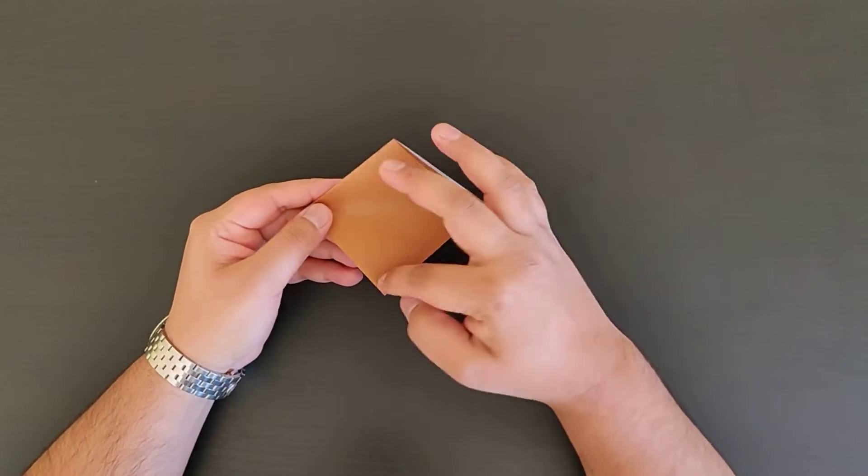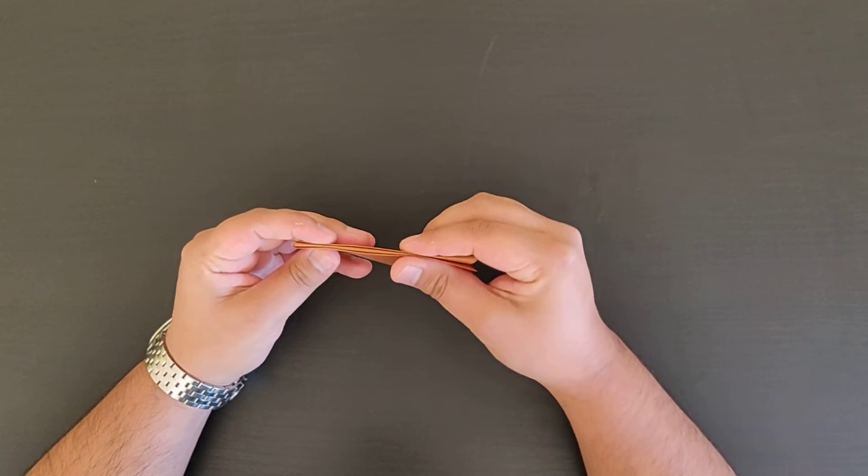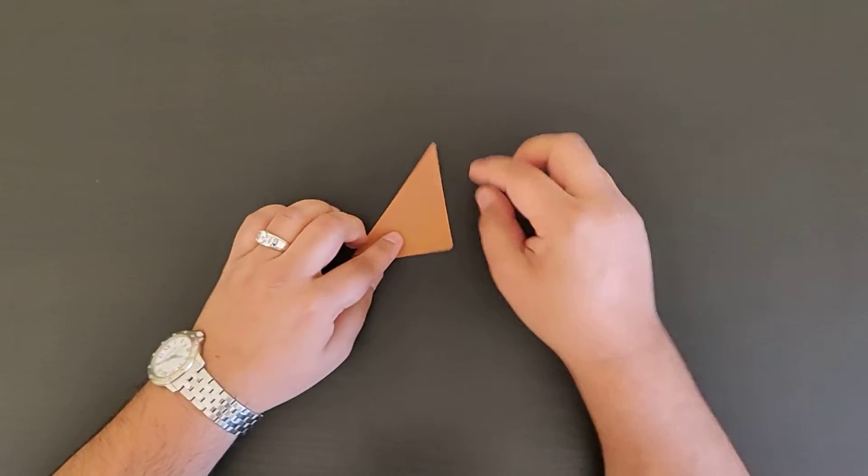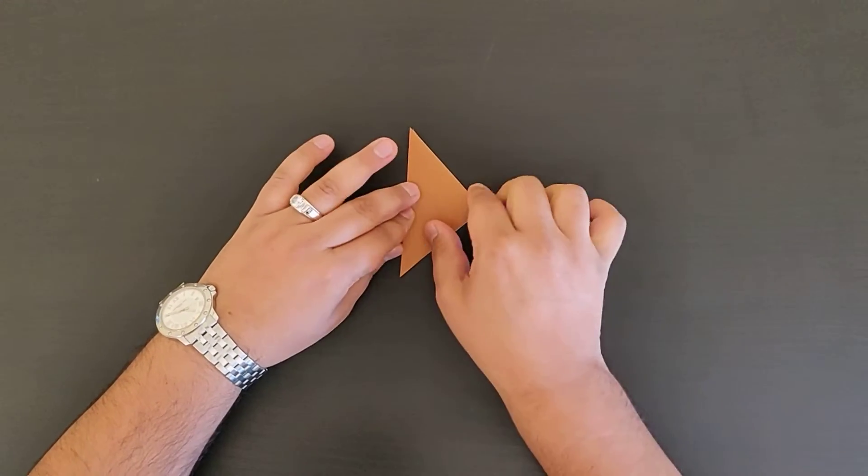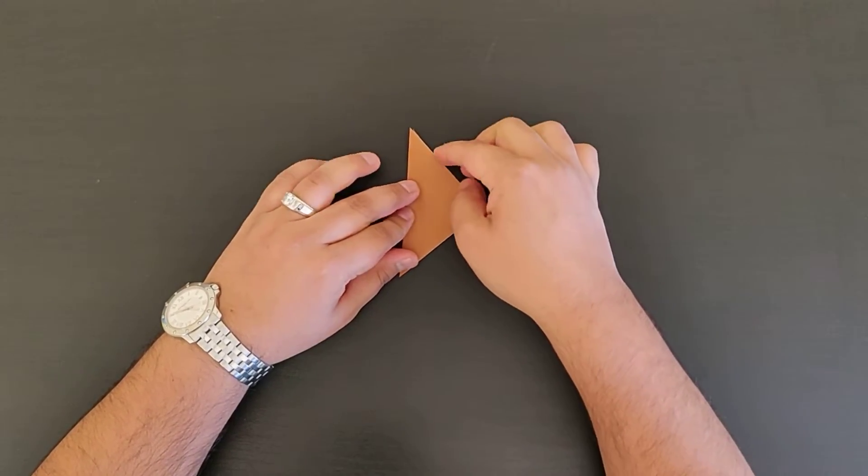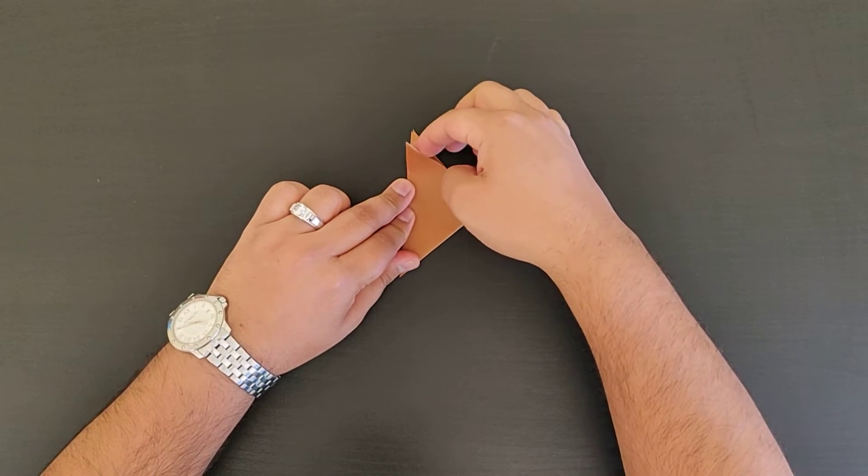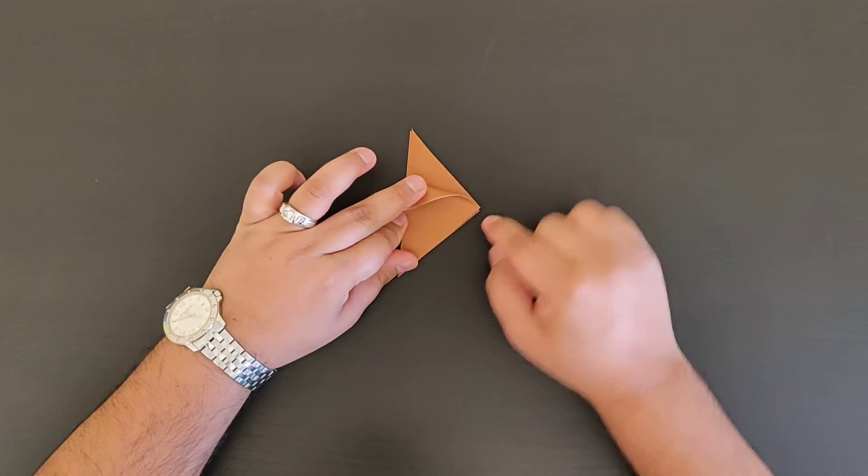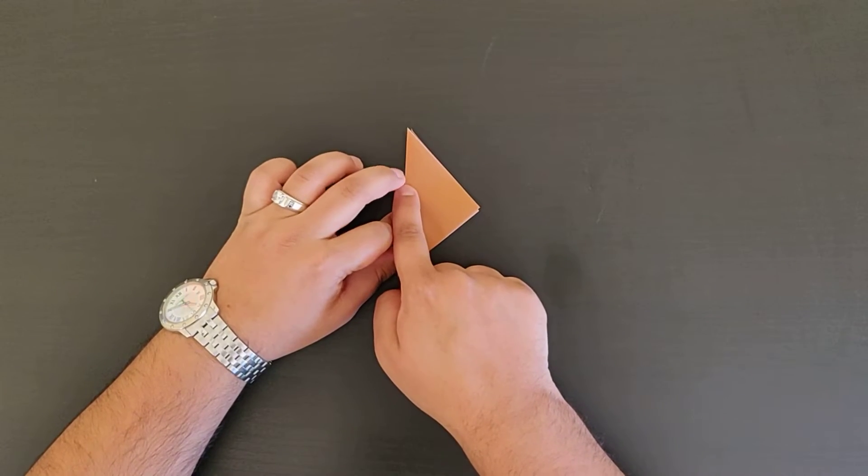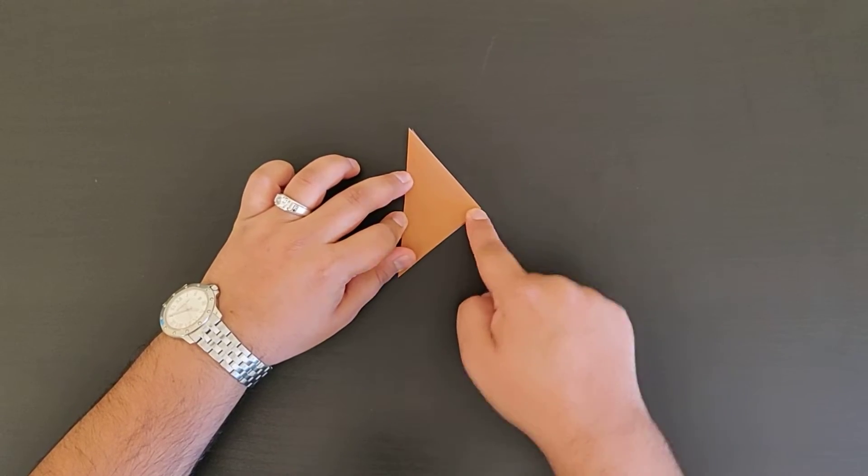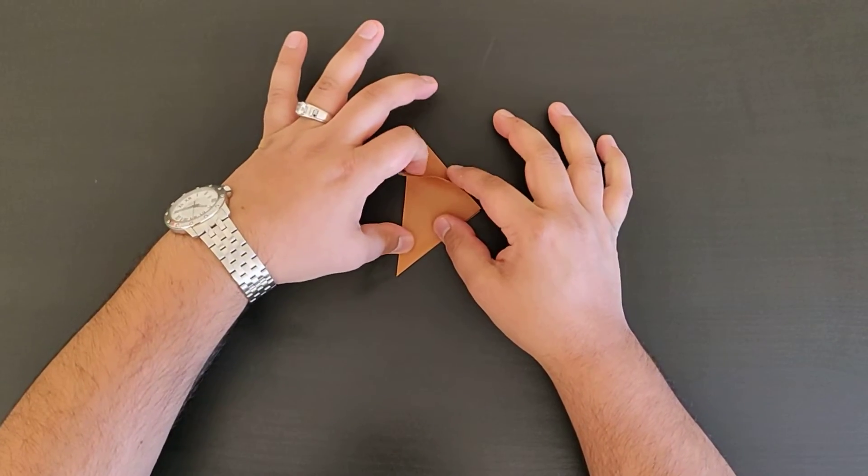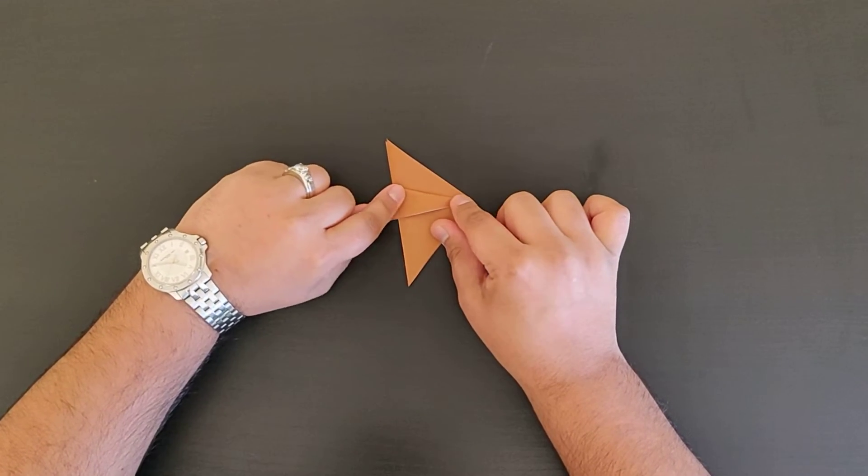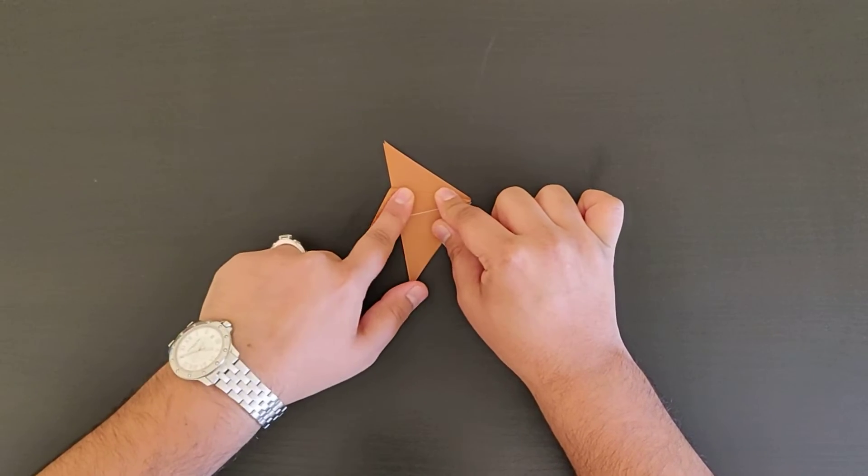Then we're going to go about a third in, and we're going to fold it down that way, making sure that the fold goes from a third there into that corner. So we go like this, about a third and into that corner.